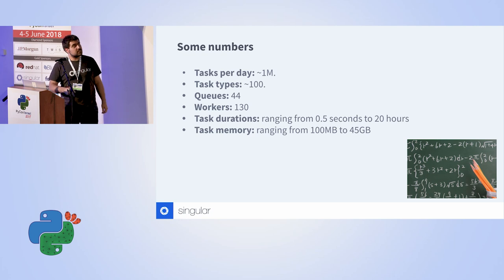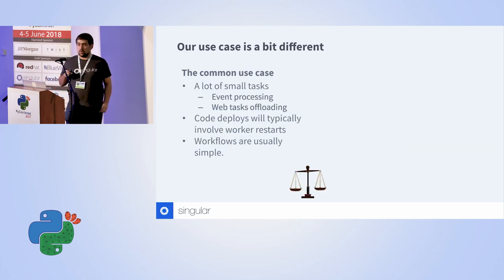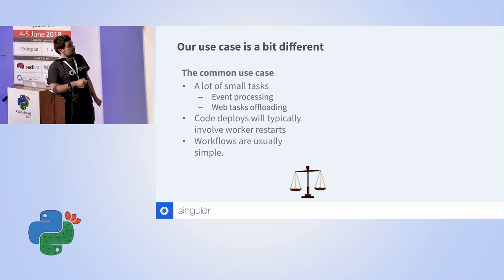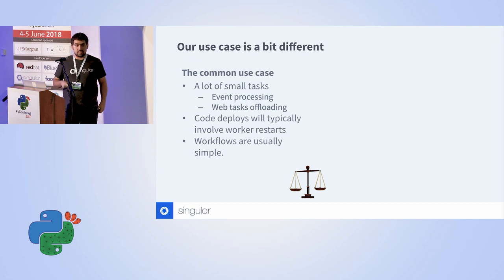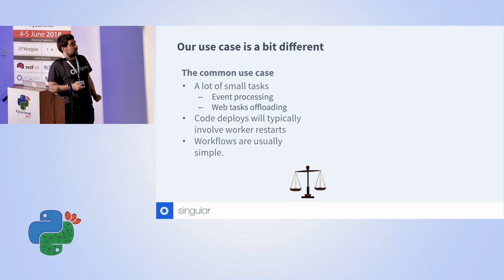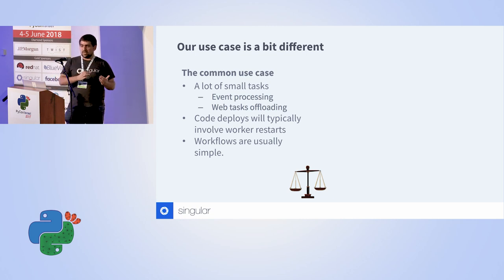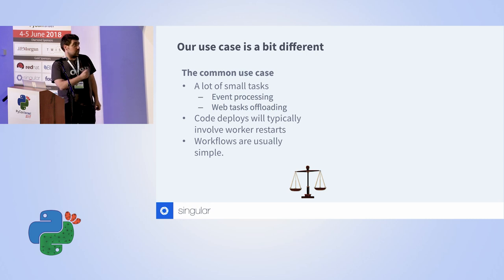Different customers have different requirements. Our use case is a bit different, which might explain why we did some things differently. The common use case — as we picture it — is that Celery was primarily designed to handle a very large amount of relatively small tasks. Common examples are things like event processing or offloading tasks from web servers. In these scenarios it's pretty common to stop the stream of events during a deploy, restart workers, and update code that way. While Celery supports quite complicated workflows, most scenarios I've heard about from friends involve tasks that typically don't have a lot of dependencies between each other.